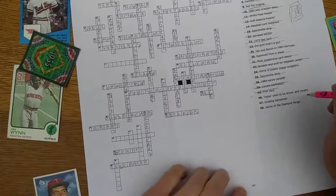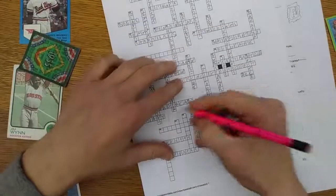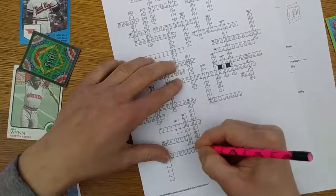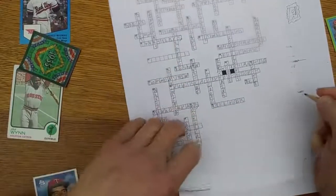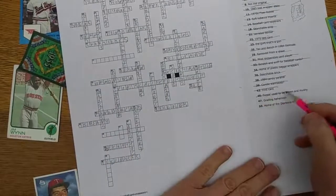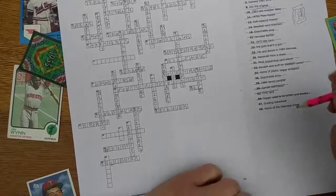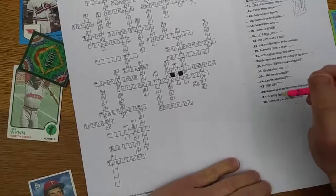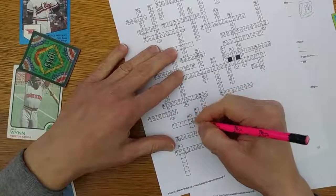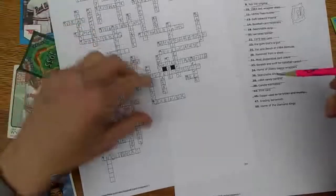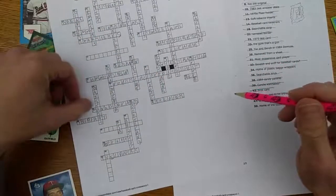Topps used to be brown and mushy - that's got to be card stock. I talk about this all the time in articles over on Wax Pack Gods. Everybody used to really gripe about the Topps card stock and wanted it to be hard and white like the rest of the companies. Eventually they got there. Grading behemoth: When you say baseball card grading, regardless of any problems that might have come up, you still think, or most people still think, PSA. And that's who fits in our puzzle here.